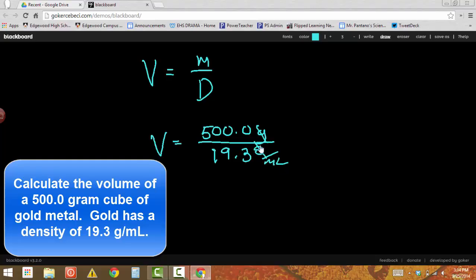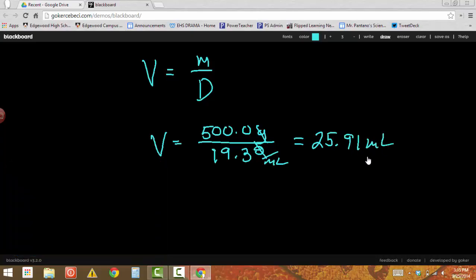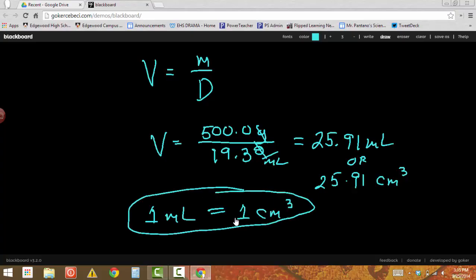Now the grams will cancel because they're both on the top of each of these two fractions. It's on the top of this fraction, it's on the top of the whole fraction. So they'll cancel and the units will work themselves out so that it ends up being milliliters or cubic centimeters, which is the same thing. So if we put into our calculator 500 divided by 19.3, we get 25.91. And that's milliliters or you can say 25.91 cubic centimeters. A milliliter is exactly the same volume as a cubic centimeter. So they're equal. Those two are equal. This is a good relationship to remember.